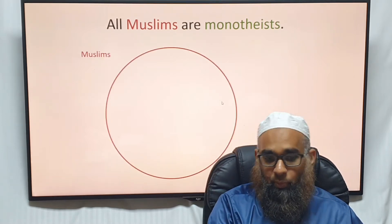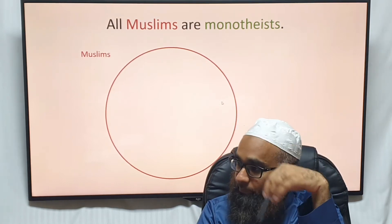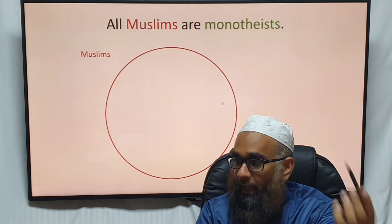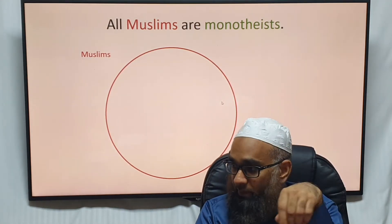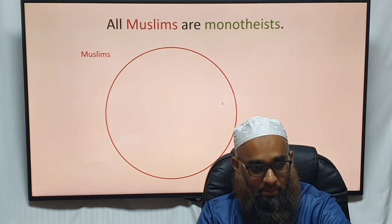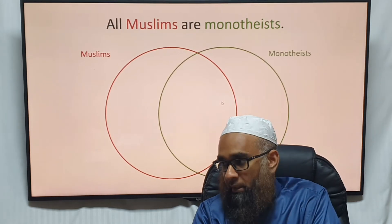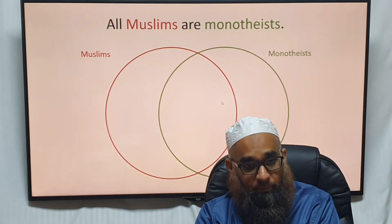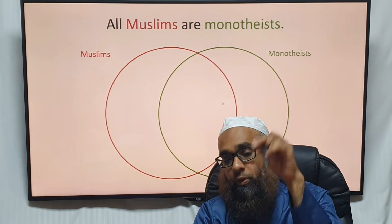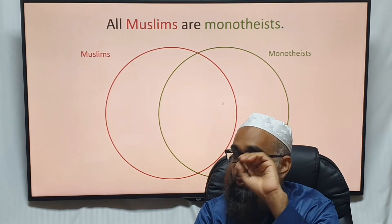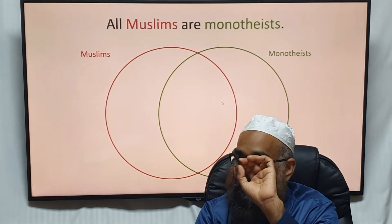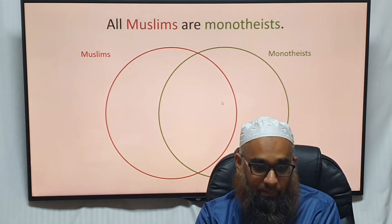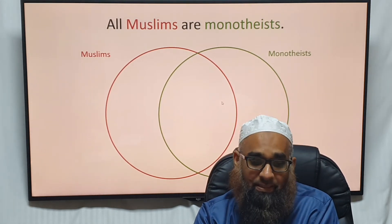Now we draw one circle for Muslims and another circle for monotheists. What we'll do is erase — or shade out — the area which doesn't exist. Which area doesn't exist in here?